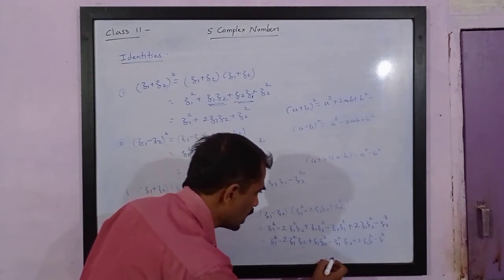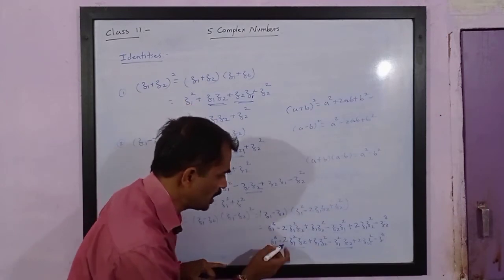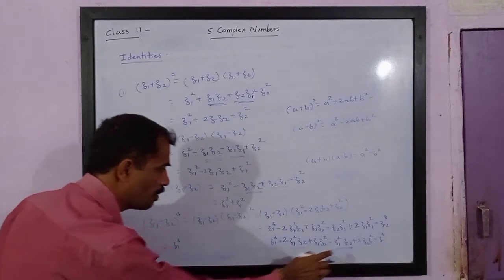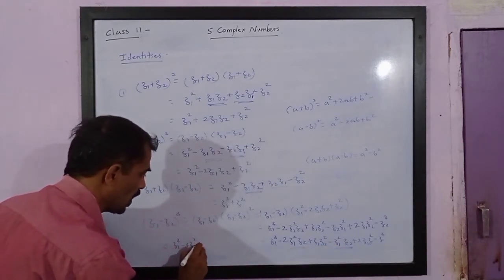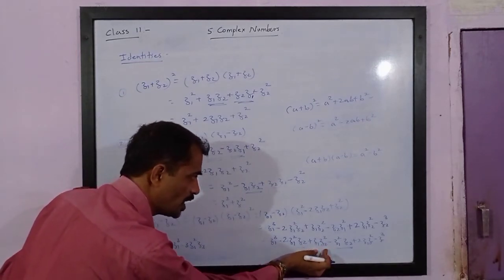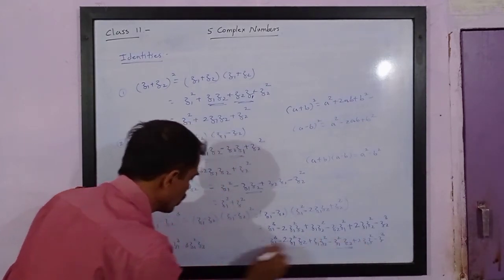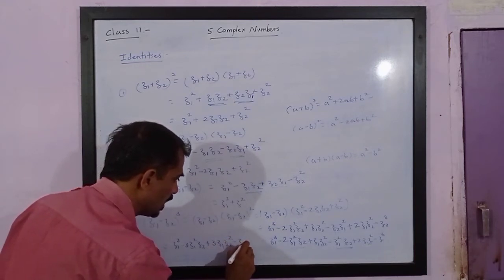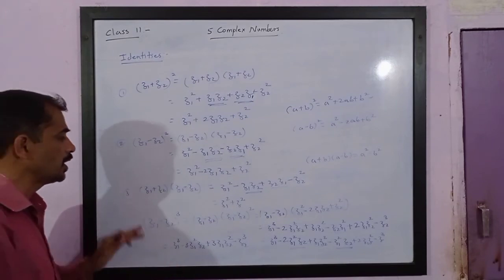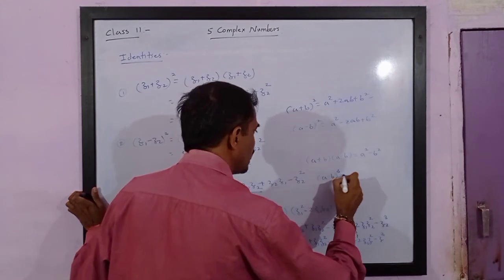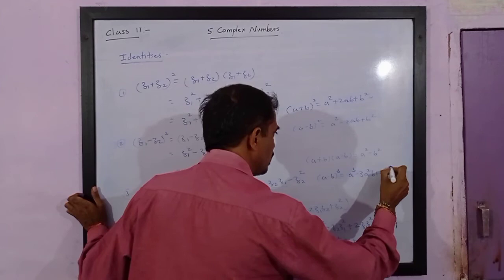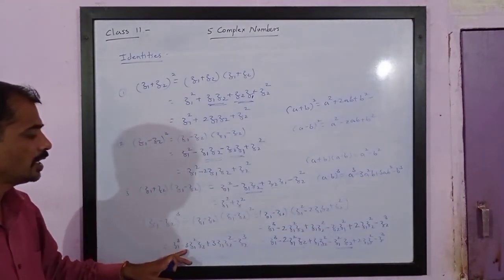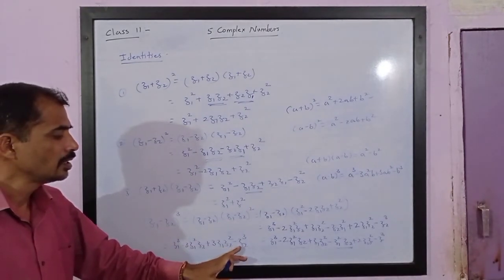Please note: the z1²z2 terms combine — negative 2 and negative 1 give -3z1²z2. The z1z2² terms combine — 1 and 2 give +3z1z2². So the final result is z1³ - 3z1²z2 + 3z1z2² - z2³. This matches (a - b)³ = a³ - 3a²b + 3ab² - b³, where the negative terms alternate.